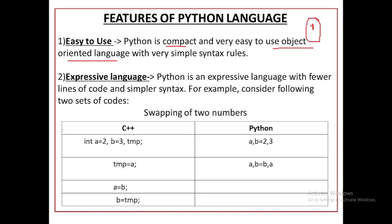An object is the combination of data and function. A function works on particular data. So Python is an object-oriented language, like C++ language, but with very simple syntax rules.